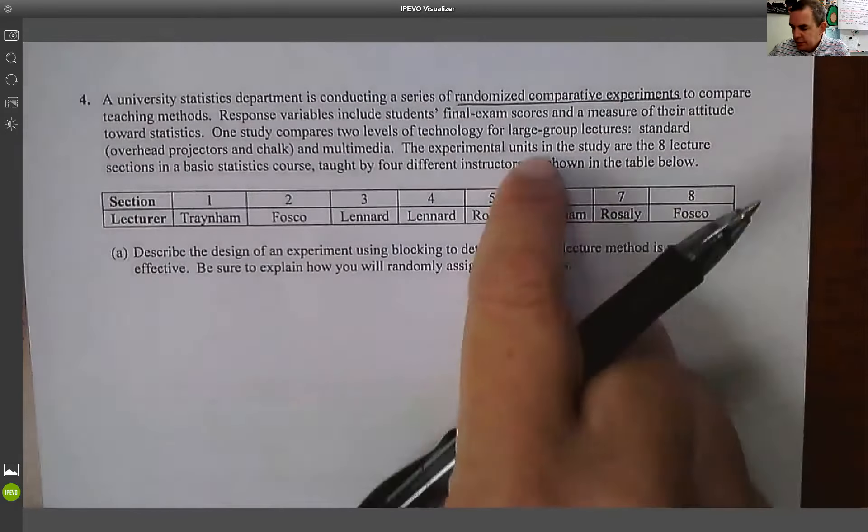So what we're going to do is we're going to compare two different teaching methods. Response variables include students' final exam scores and a measure of their attitude towards statistics. One study compares two levels of technology for large group lectures: standard lecture where it's overhead projector and chalk, and multimedia where it's computers and videos and things like that. The experimental units in the study are the lecture sections in a basic statistics course taught by four different instructors as shown in the table below. And as you notice, every instructor teaches two different sections. So like, you know, Tram teaches section one and Tram teaches section six. So we have four teachers teaching two sections each.